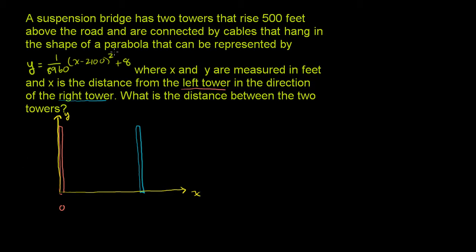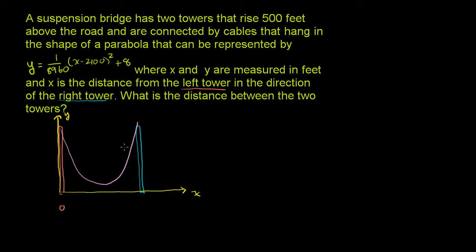They're telling us that the cable that connects these two towers is in the shape of a parabola. They're the same height, so the parabola will look something like this. One technique for finding the distance between the two towers is if we could figure out the minimum point of this parabola, which is also going to be the vertex. That minimum point is going to be halfway between the two towers. So if we can figure out that x-coordinate and multiply by 2, we'll have the distance. The parabola is symmetric around the vertex, and both towers are at the same height.